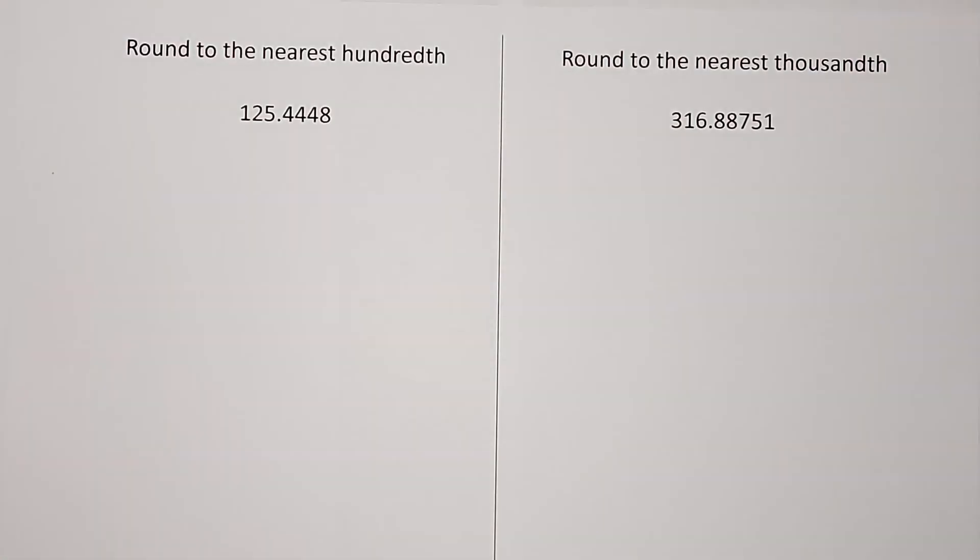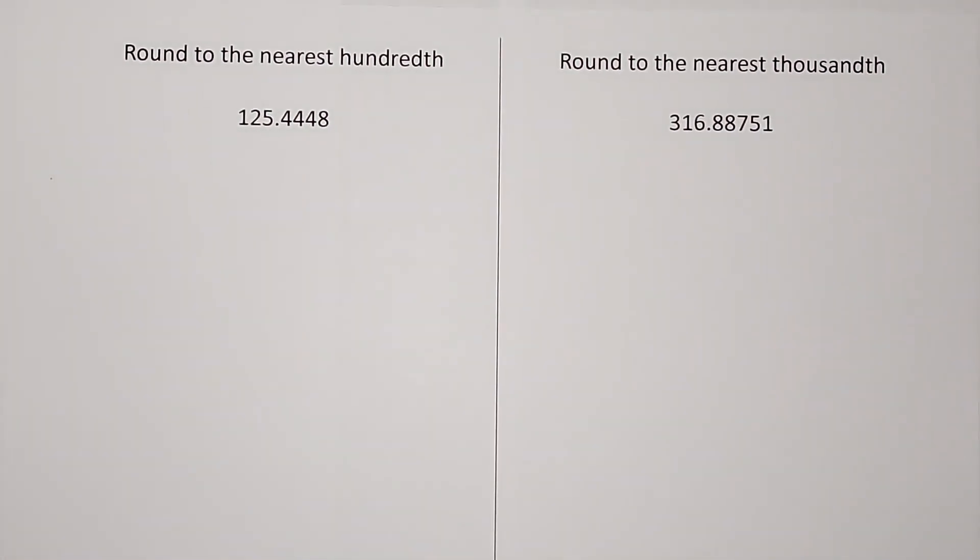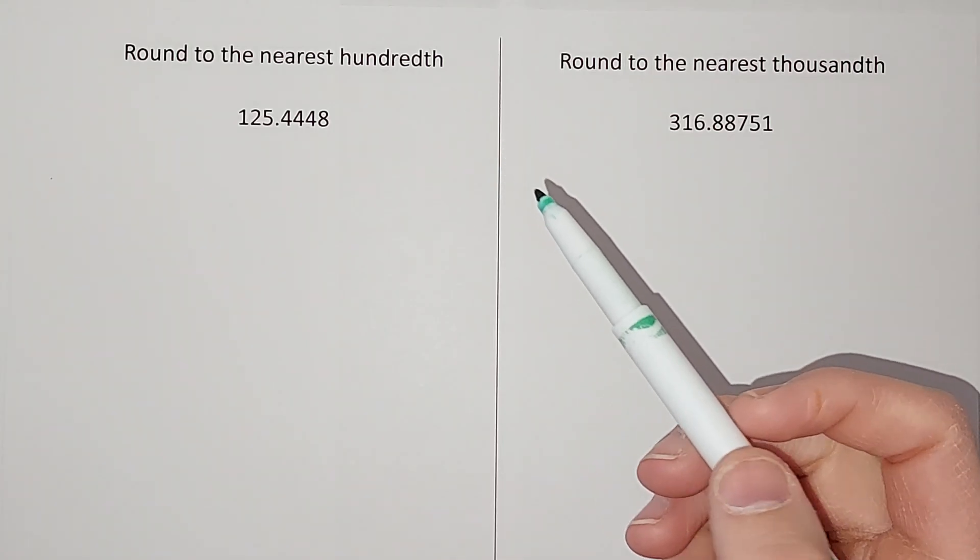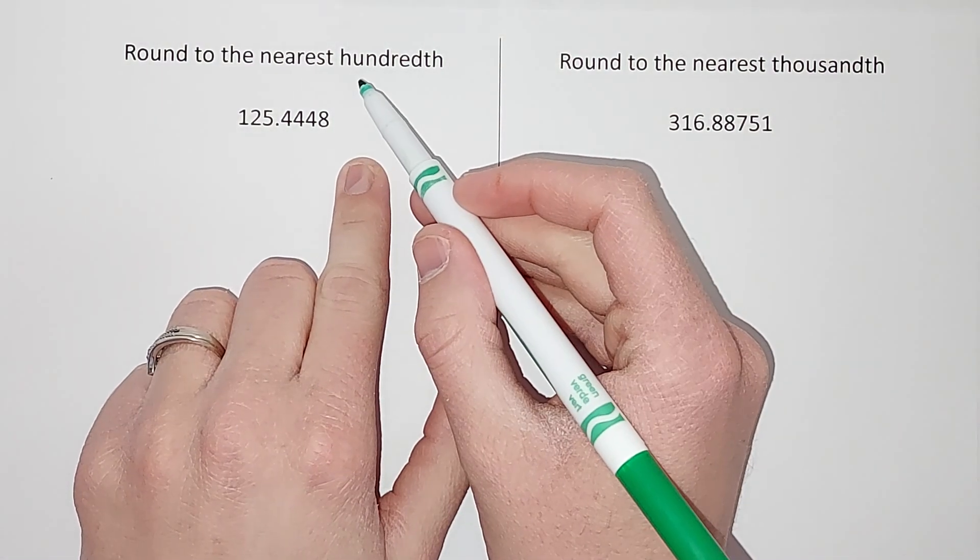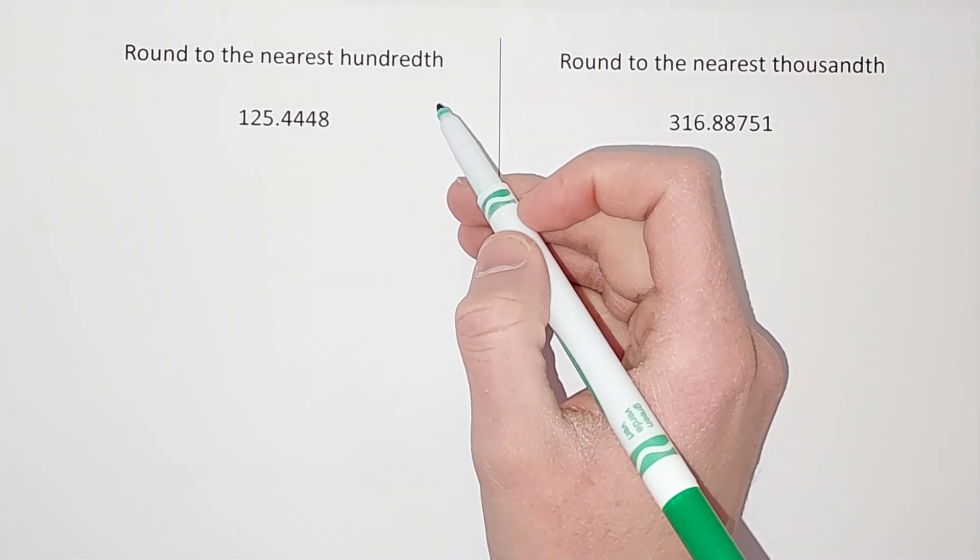Okay, that's what helps me. If that helps you, great. If not, come up with your own way to help you remember. All right, so this one they want us to round to the nearest hundredth. Okay, hundred has two zeros, so that means they want two after the decimal place.